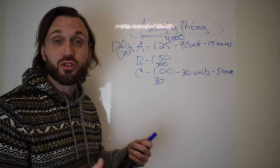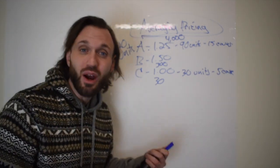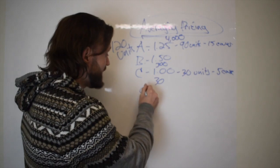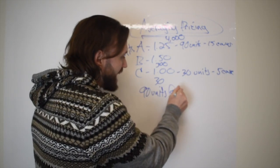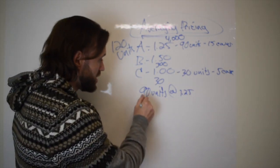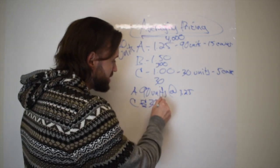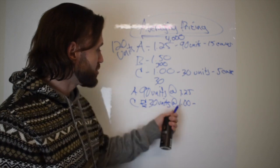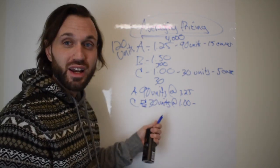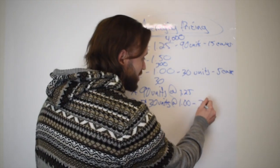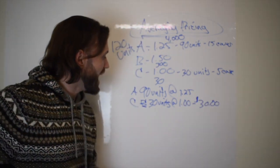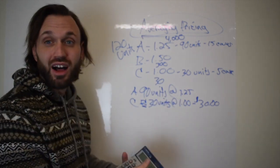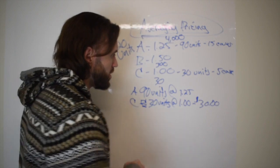Now we have the same product coming from two different distributors, so we have to average out the pricing to get our average cost of goods. From Distributor A: 90 units at $1.25. From Distributor C: 30 units at $1.00. We multiply: 30 × $1.00 = $30, and 90 × $1.25 = $112.50.